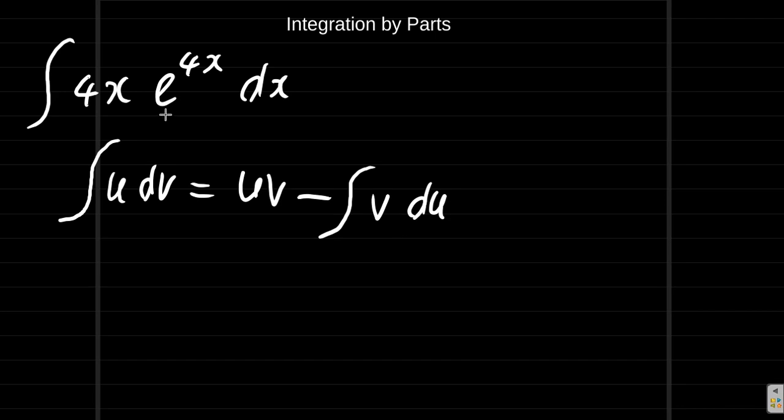If we consider e to the 4x and differentiate that, it wouldn't really help us that much because it doesn't really get any simpler when you differentiate e to the 4x. So what about 4x? That itself will give us a simpler expression when you differentiate 4x.